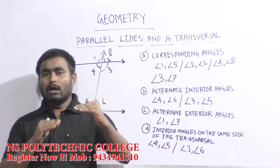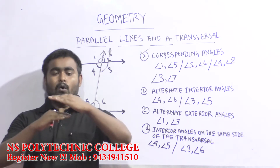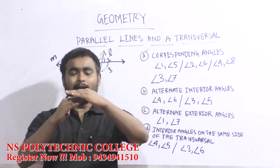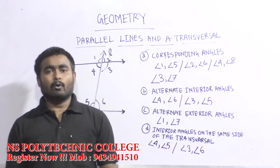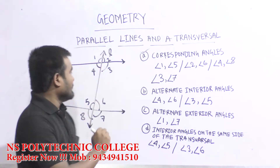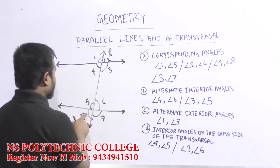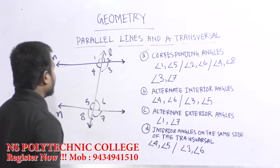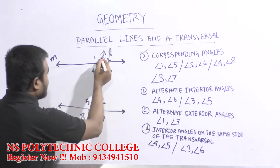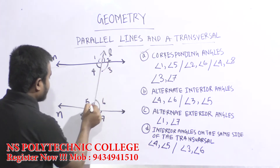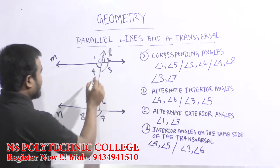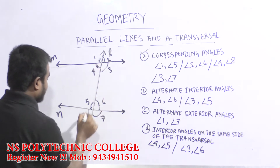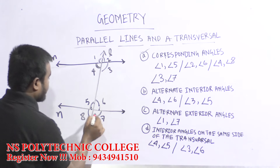Exterior angle, interior angle, exterior angle — parallel line. Exterior angle: 1, 2; exterior: 8 and 7; exterior angle: 4 and 3; interior: 5 and 6; interior. Corresponding angle: 1, 5; 2, 6; 4, 8; 3, 7.